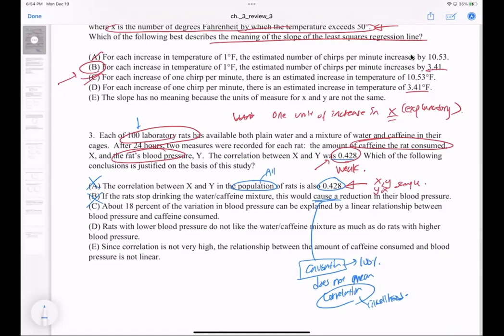About 18 percent of the variation in blood pressure can be explained by a linear relationship between blood pressure and caffeine consumed. If you do 0.428 squared, you get 0.18 something. This is explaining the r-squared value, so it's correct.